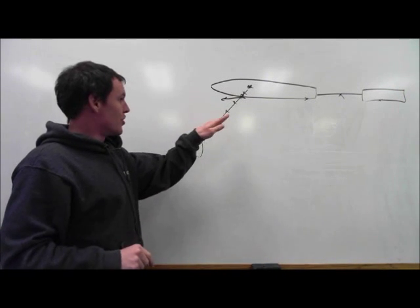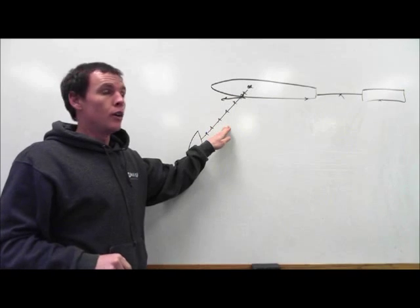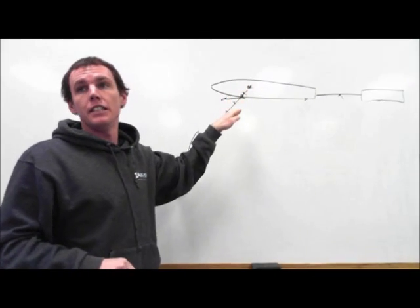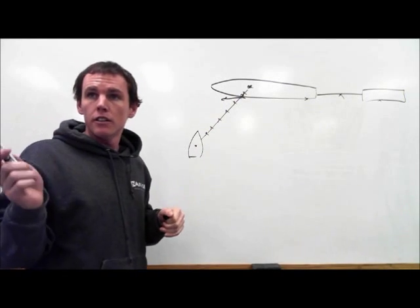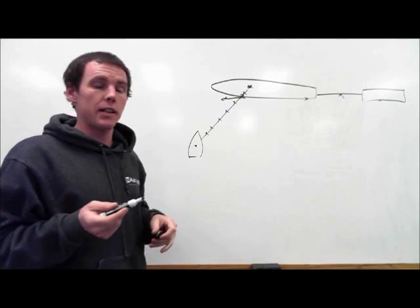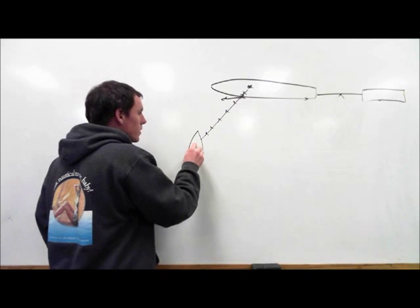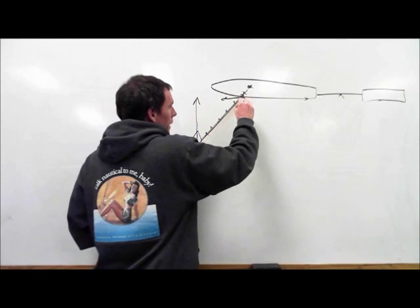Risk of collision shall exist when you have a steady bearing and a decreasing range. These are two things we'll have to get straight, and that will straighten out by the end of the class: heading and bearing.